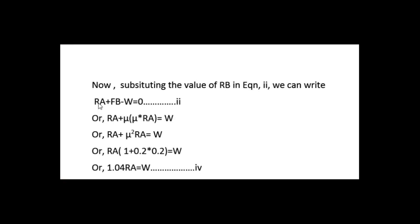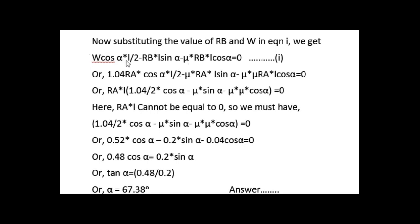From equation 2: RA + FB − W = 0. Substituting FB = μ × RB and RB = μ × RA, we get RA + μ × RA + μ × μ × RA = W, which solves to W = 1.04 × RA. Substituting the values of RB and W into equation 1: 1.04 RA × cos alpha × (L/2) − μ × RA × L sin alpha − μ × μ × RA × L cos alpha = 0.